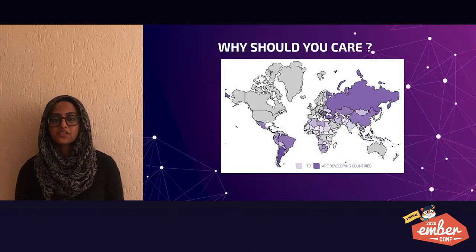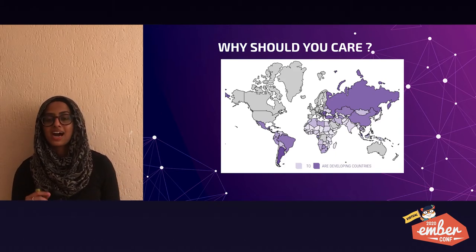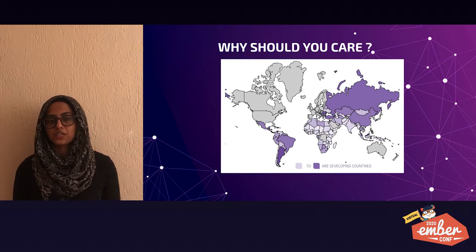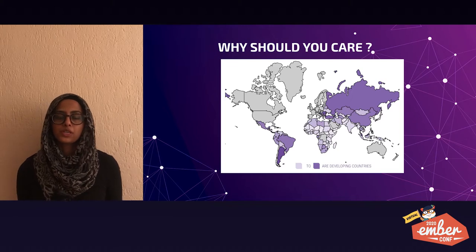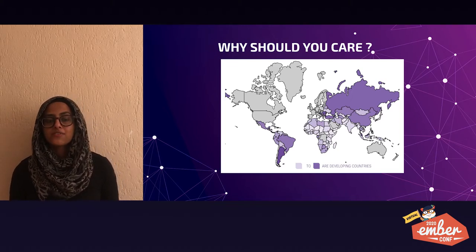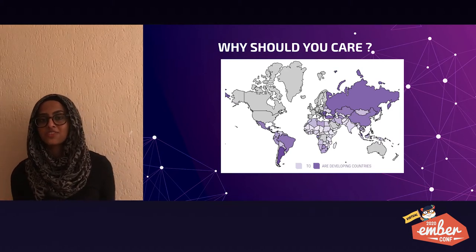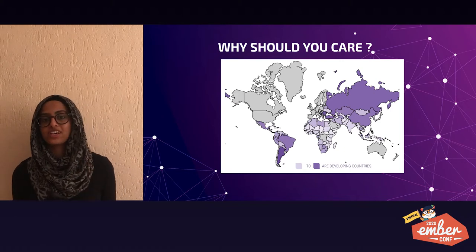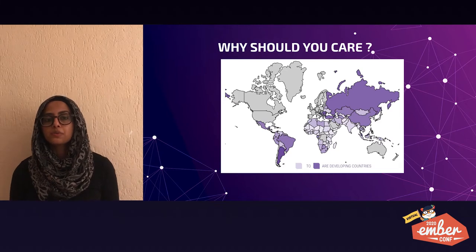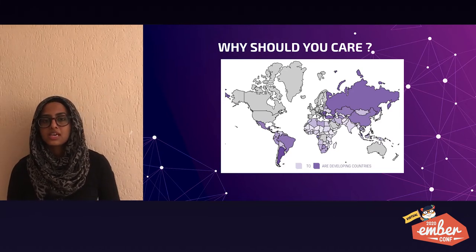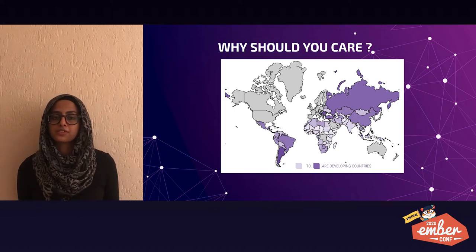On this map, the countries marked in purple are developing countries. The darker purple represents higher income developing countries, unlike most of Africa, but they are nevertheless still developing. Whatever challenges Africa experiences, at least 80% of these developing countries are experiencing them too. Which means if you don't build your apps to cater for emerging markets, these are the people that will either not be able to use your apps at all, or will have difficulty using them.